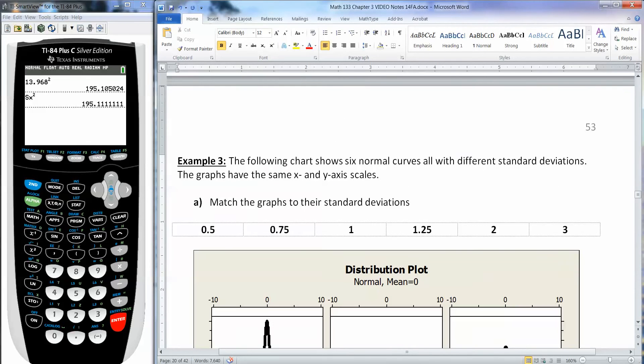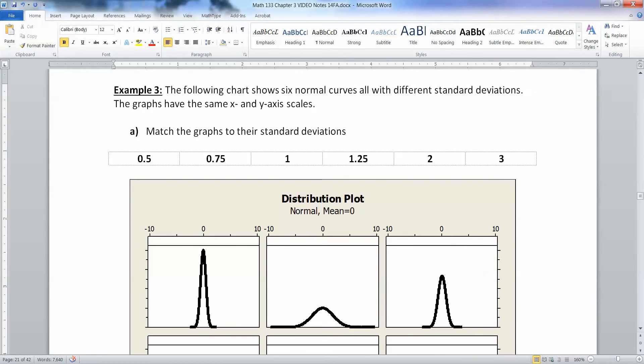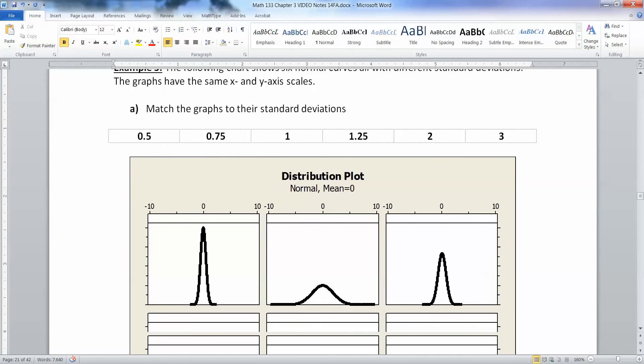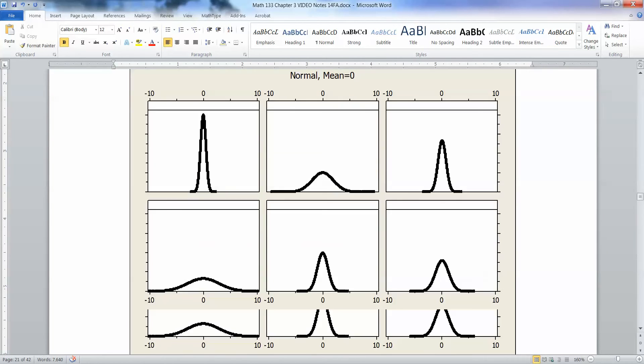Alright, so let's move on to the next example. The following chart shows six normal curves with all different standard deviations. And they have the same x and y scale. So they're on the same scale, they're all drawn the same.